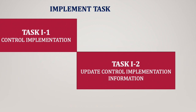Let's look at the tasks under implement security controls. There are two tasks. Task number one is control implementation — go ahead and implement the controls based on either the STIGs or the CIS benchmark. Task number two is update control implementation information — meaning that once you have implemented the control, go ahead and update the implementation information in the SSP, or security and privacy plan, letting us know how the control is implemented, how it is functioning, what is the expected behavior, and what is the expected output.